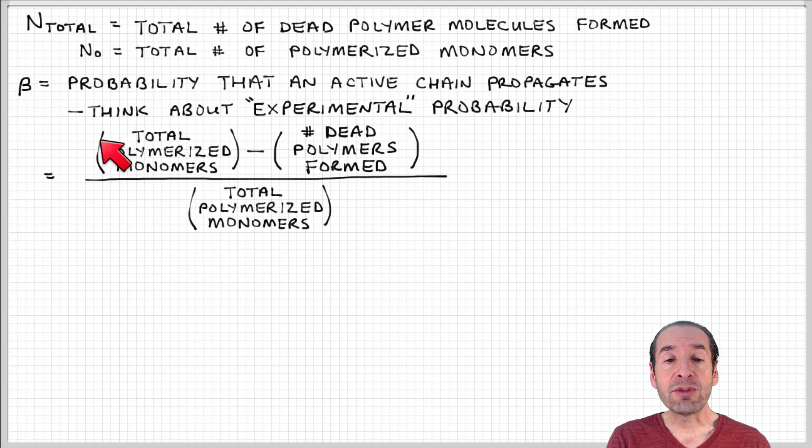So I'm going to say that this parameter beta, the probability of propagation, is equal to this difference between the total number of polymerized monomers minus the number of dead polymers formed over the total number of polymerized monomers. When I'm counting the total number of polymerized monomers, I'm actually counting events. So these monomers could be incorporated into an active chain, or they could be incorporated into a dead chain.